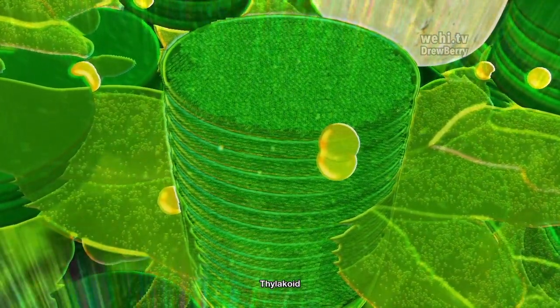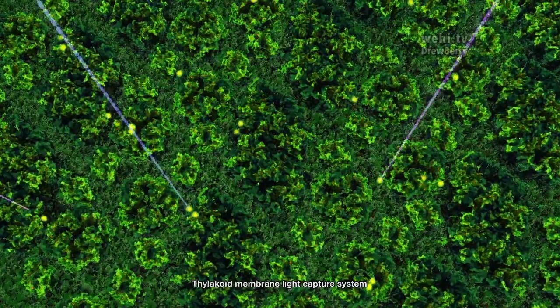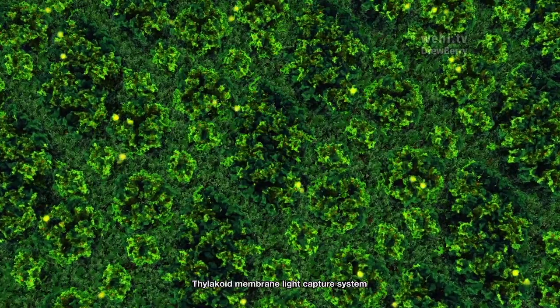Spread across the thylakoid membrane are vast arrays of proteins and pigment molecules that can capture photons and convert light energy into chemical energy.